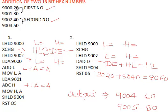To add 16-bit numbers, we add the lower byte of the first number to the lower byte of the second number, and then the higher byte of the first number to the higher byte of the second number. There are two methods: the first is the simple method, and the second uses the DAD instruction, which stands for Double Add.